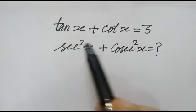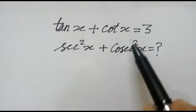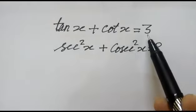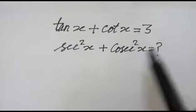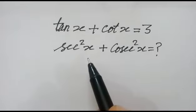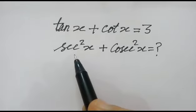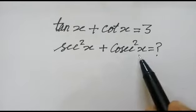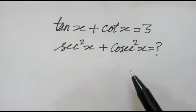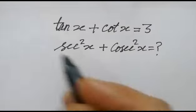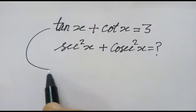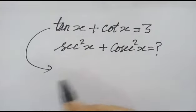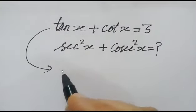Hi friends, we have given tan x plus cot x is equal to 3. We have to find out the value of sec square x plus cosec square x. So first, squaring on both the sides.